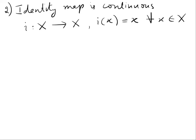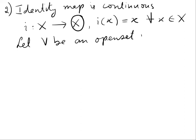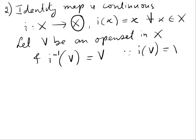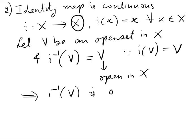Now, how do you prove this is continuous? Let V be an open set in the codomain. The codomain here is X. And what is I inverse V? I inverse V is nothing but V, because I of V is V. So I inverse V is V, and V is open in X. Therefore, I inverse V is open in the domain X. Therefore, the identity map from X to X is continuous.